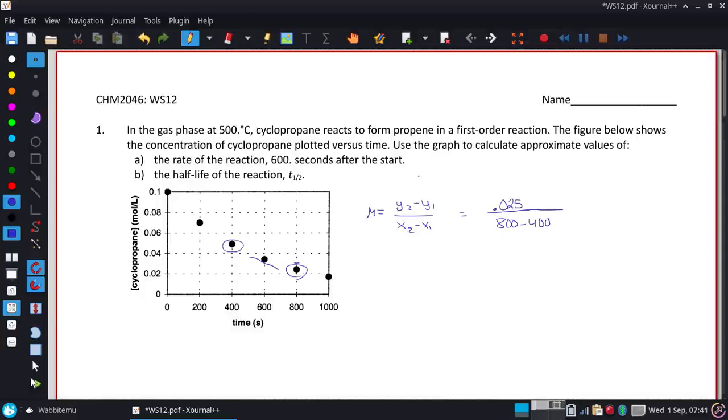And that one's almost dead in between the two hash marks. So I'm going to put it right at 0.050. And it does say approximate, so I might end up with different values than you did.